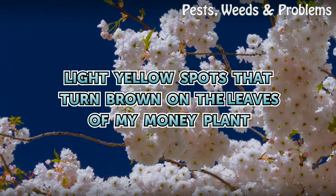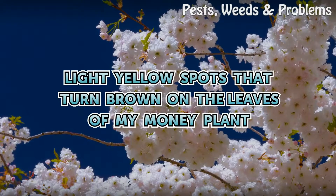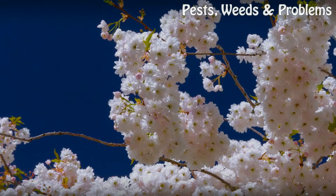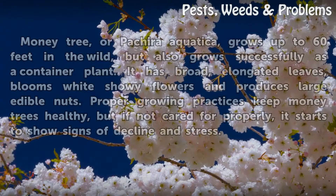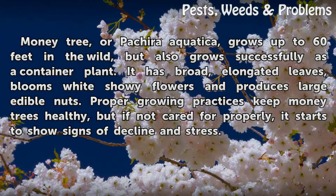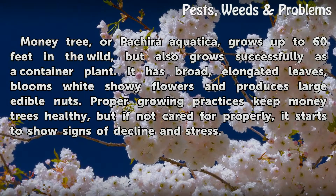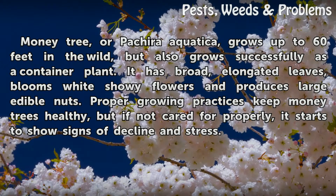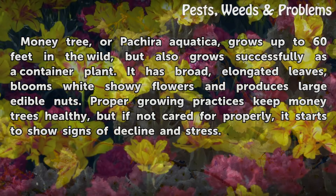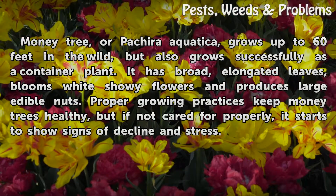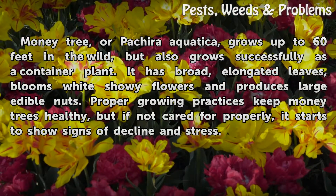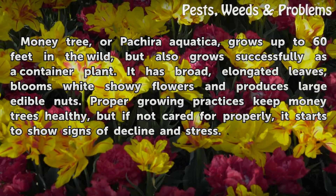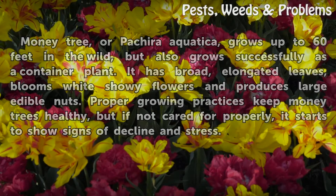Light yellow spots that turn brown on the leaves of my money plant. Money Tree grows up to 60 feet in the wild, but also grows successfully as a container plant. It has broad, elongated leaves, blooms white showy flowers and produces large edible nuts. Proper growing practices keep money trees healthy, but if not cared for properly, it starts to show signs of decline and stress.